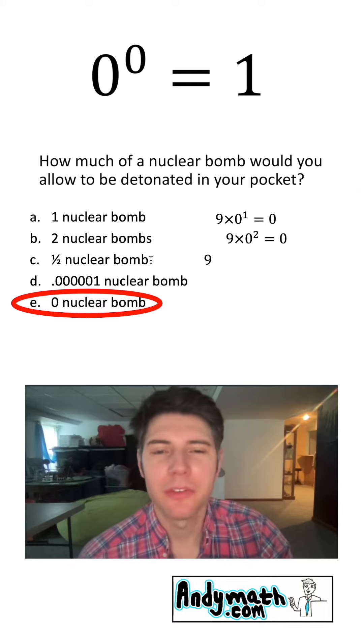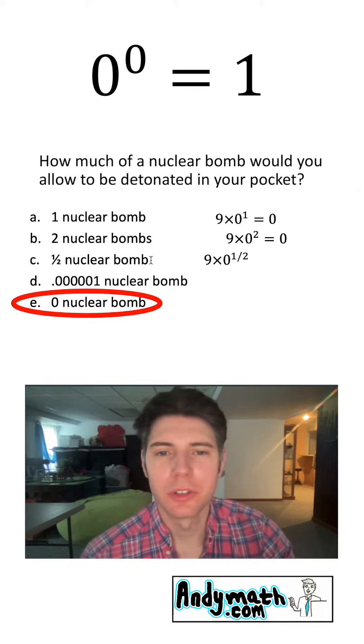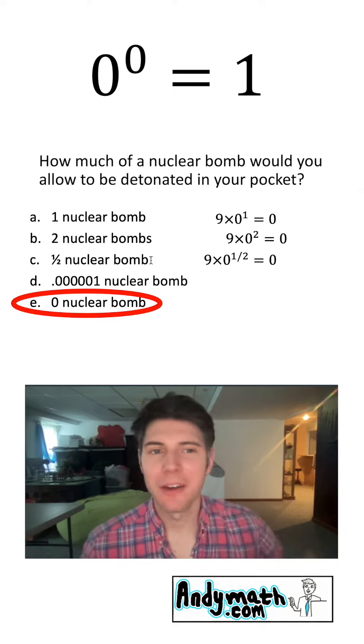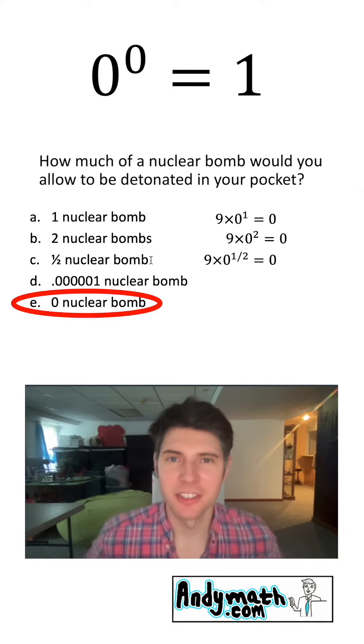So how would we do half of a nuclear bomb? That would be times zero to the one half, and that is still zero. So even though it's only half a nuclear bomb, it still just makes our nine a zero.